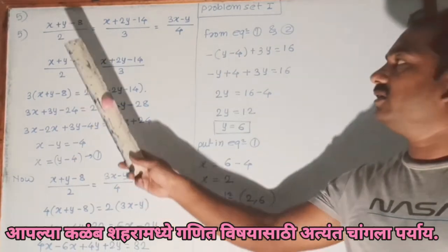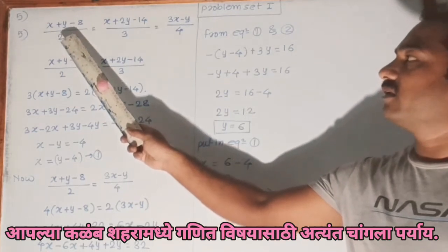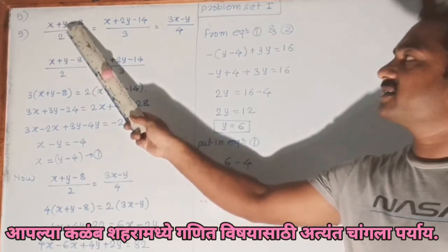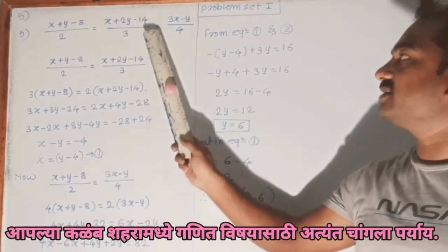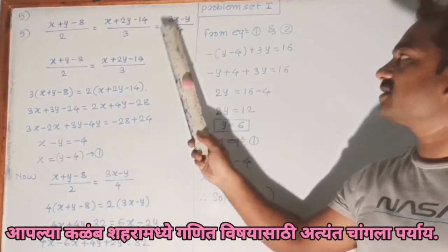We are given in the question: (x + y - 8)/2 = (x + 2y - 14)/3 = (3x - y)/4. So there are three parts of the equation that are equal.